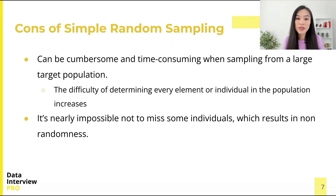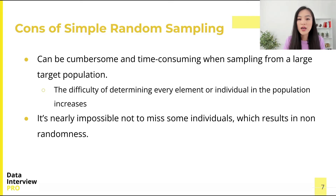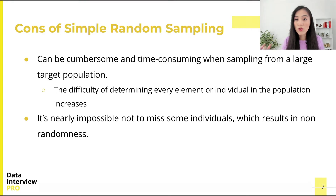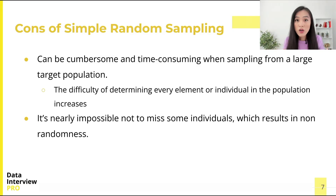Simple random sampling can be cumbersome and time-consuming when sampling from a large target population. This becomes a bigger problem as the difficulty of determining every element or individual in the population increases. Imagine the population of interest is all data scientists in the US — we can try to create as complete a list of individuals as possible, but it is nearly impossible not to miss some individuals.